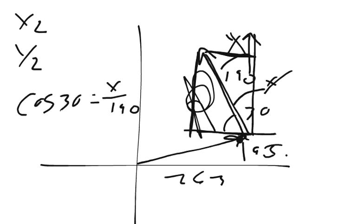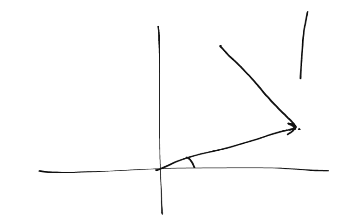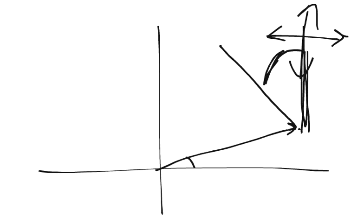Let me redraw this. So, this is north, and this is the 30 degrees right here. This is my x value, and this is my y value. If we say that this is north, south, east, west, then I have something that's 30 degrees to the west of that. So, this is my adjacent, this is my opposite. And I know that this is 190.